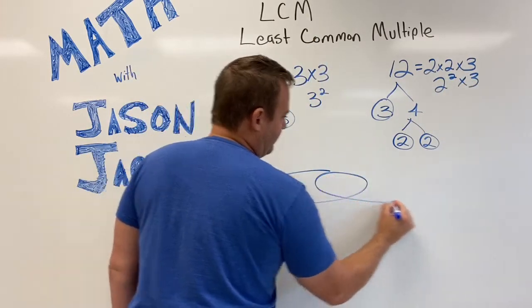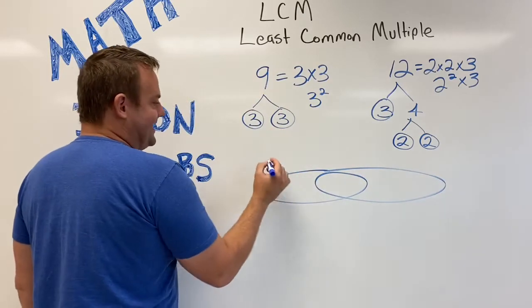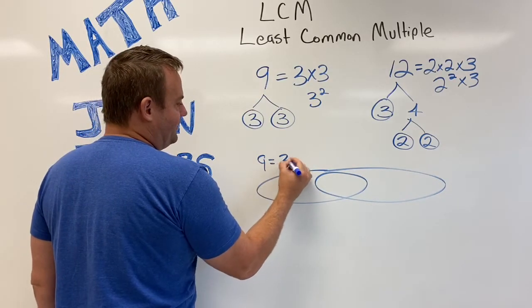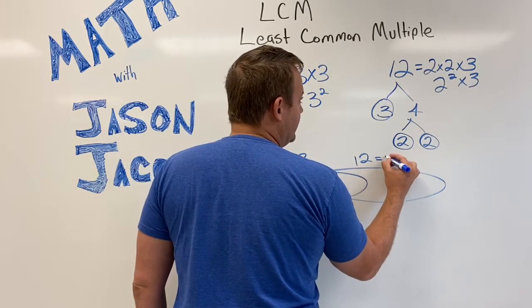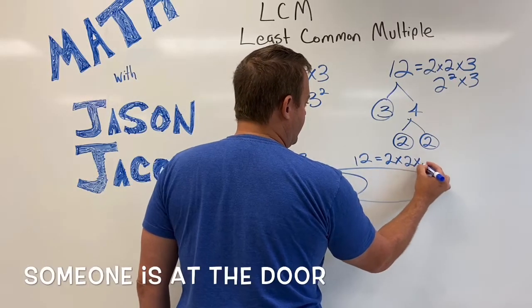Now I'll make the Venn diagram. So 9 is 3 times 3, and 12 is 2 times 2 times 3.